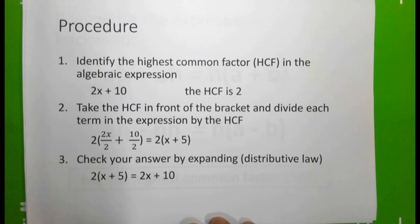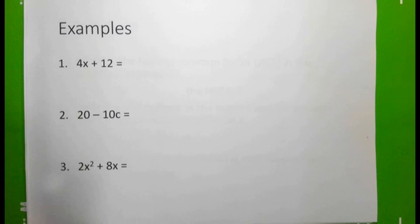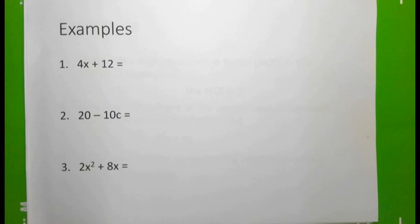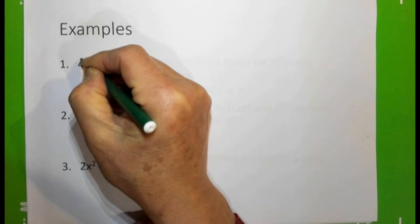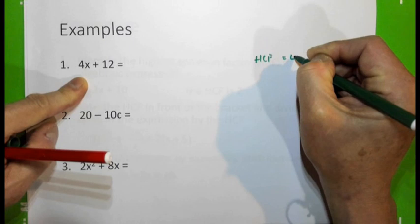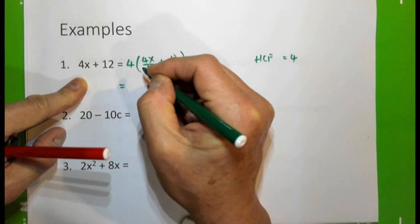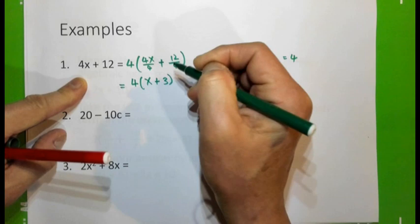Using this procedure, let's look at some examples. The first example is 4x + 12. Carefully examine the terms: 4x can be divided by 4 and 12 can be divided by 4, so the highest common factor is 4. If we take the 4 out, we have 4x divided by 4 plus 12 divided by 4, which gives us 4 into (x + 3).